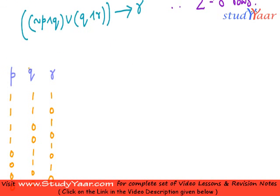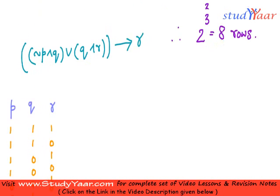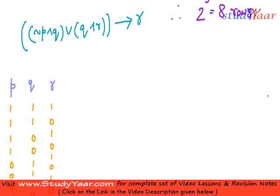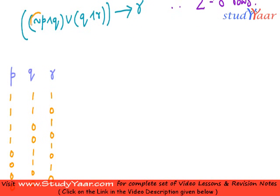This covers all possibilities for p, q, and r. For example, here r is true and p and q are false; here p is true, r is true, but q is false. We are going to see for all these possibilities what is the truth value of the compound statement. For that, first I am going to find out what is the negation of p.